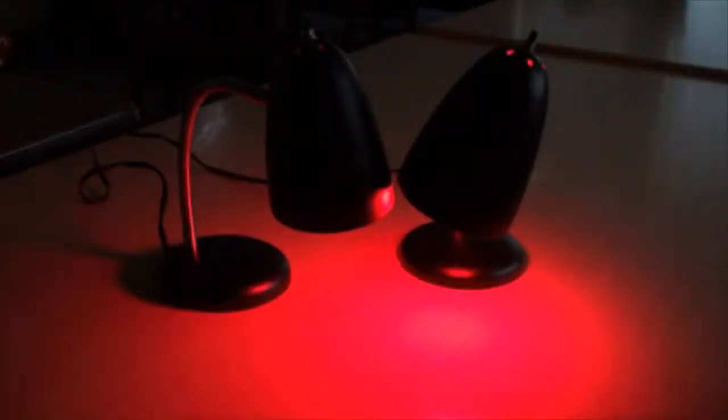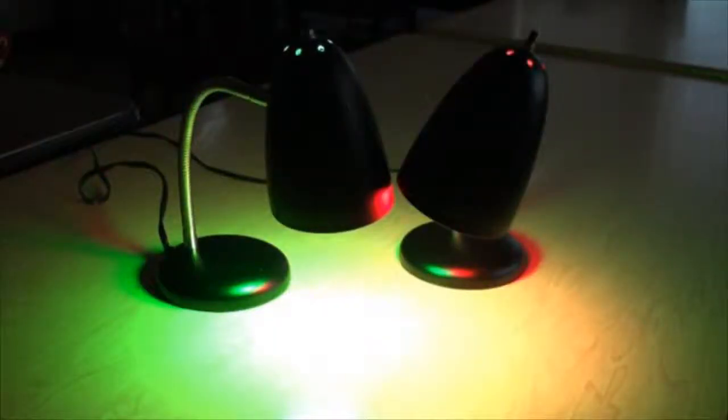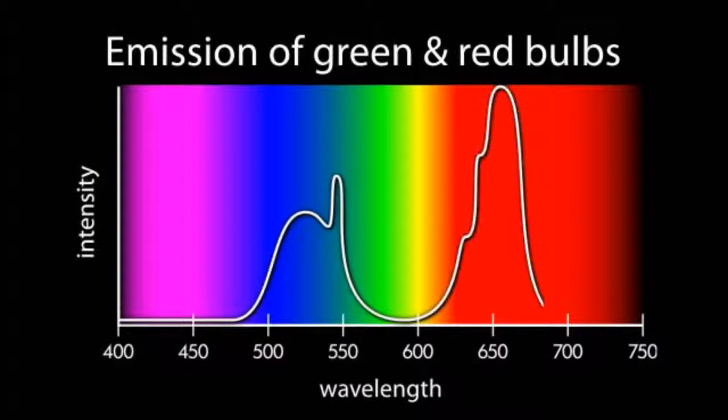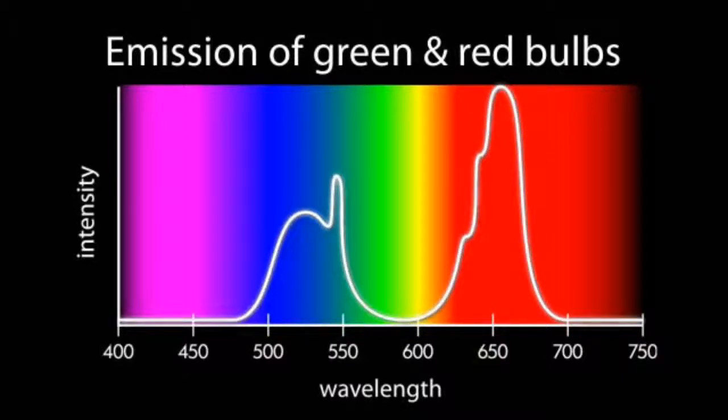Another example is when we mix colors of light on the surface of a table. The combined emissions from a green bulb and a red bulb look yellow. However, the probe does not show that yellow wavelengths of light are present. So why do we see yellow?